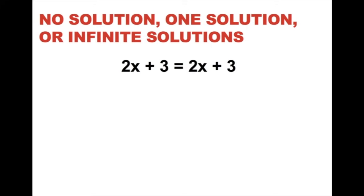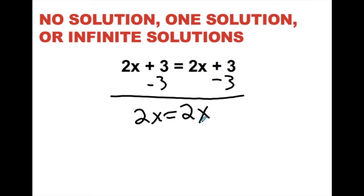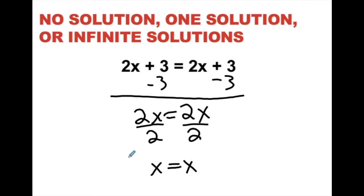This next one is a fun one. If you look at it, notice that we have the same thing on both sides: 2x plus 3 equals 2x plus 3. Right away, since both sides are identical, this is a clear indication of infinite solutions — no matter what number I put in there, they're going to be equal. If you want to verify: subtract 3 from both sides to get 2x equals 2x, then divide both sides by 2 to get x equals x. Zero equals zero, negative one equals negative one, a million equals a million — no matter what number, it will be correct. This is infinite solutions.